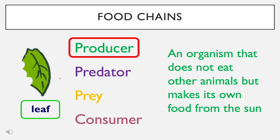The first organism in our food chain is the leaf. A leaf is what we call a producer — an organism that does not eat other animals, but makes its own food from the sun. It's involved in that very important process called photosynthesis, and it's actually chloroplasts within the leaf cells that help the producer synthesize its food from the sun.